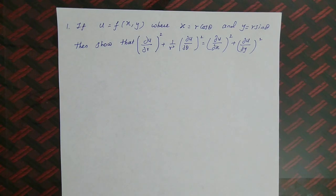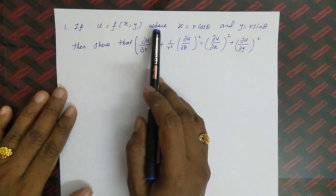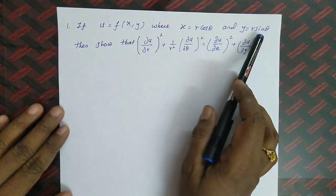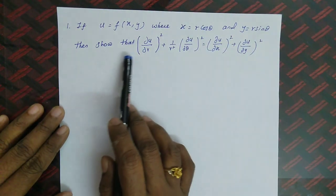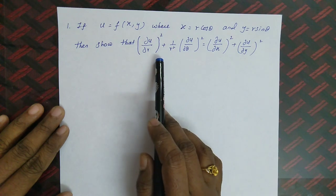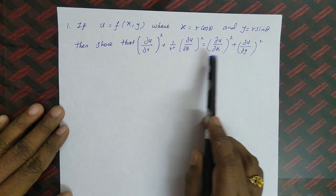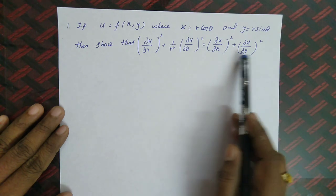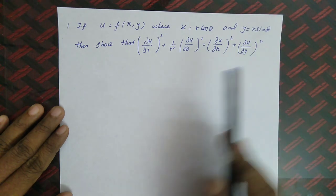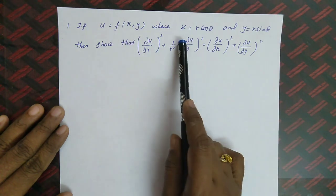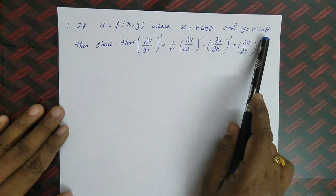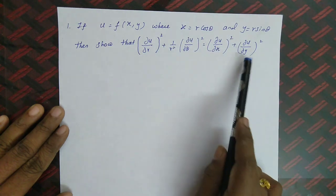Welcome to the lecture series on functions of several variables. Today we are going to see some problems based on partial derivatives. If u equals f of x, y where x equals r cos θ and y equals r sin θ, then show that (∂u/∂r)² + (1/r²)(∂u/∂θ)² = (∂u/∂x)² + (∂u/∂y)². So u is a function of x and y, and x and y are functions of r and θ.